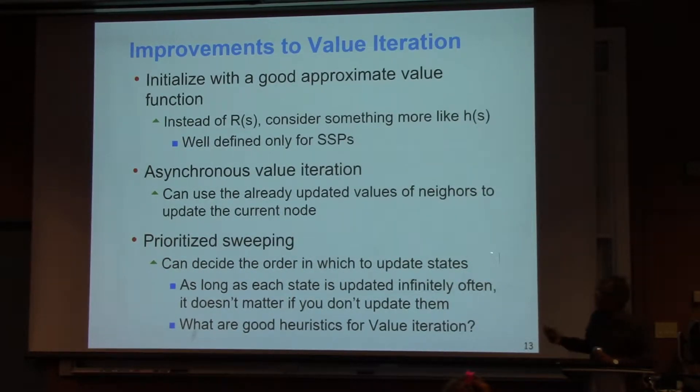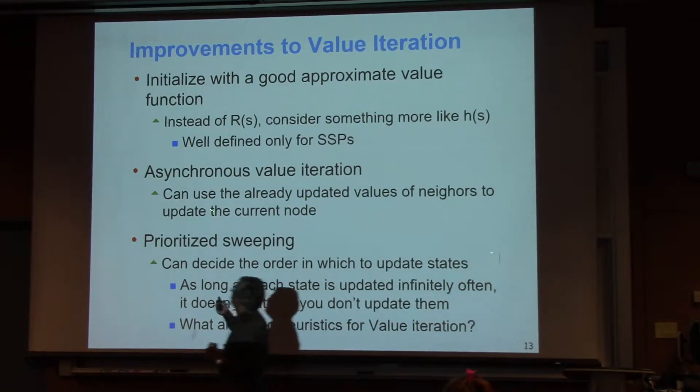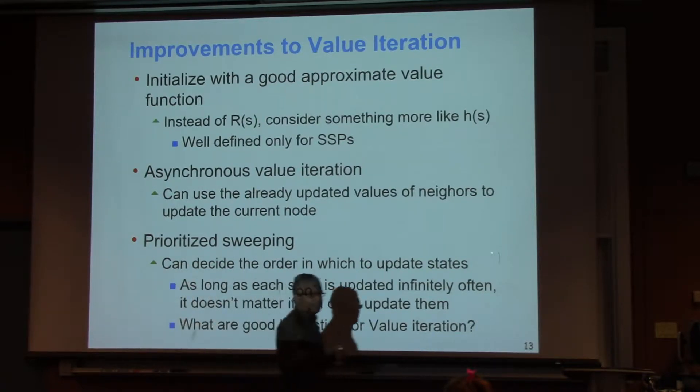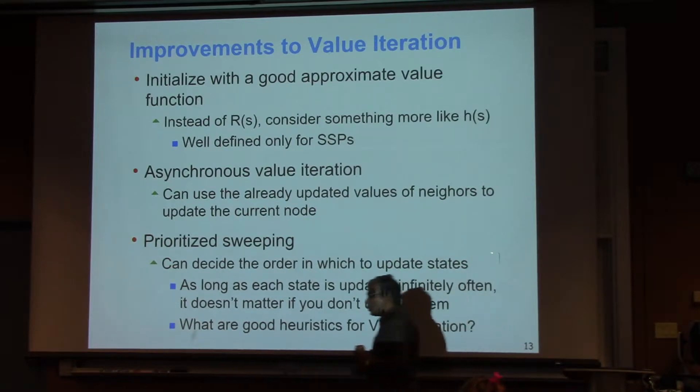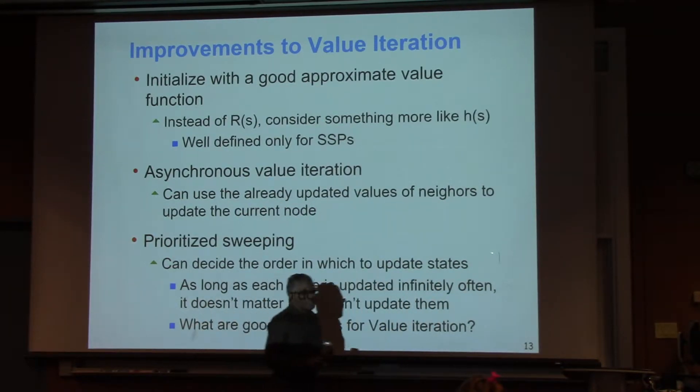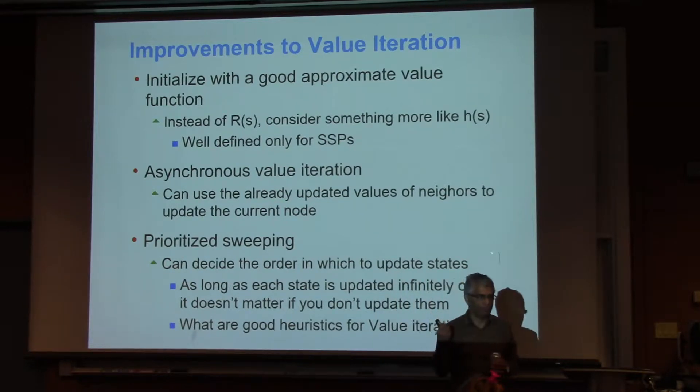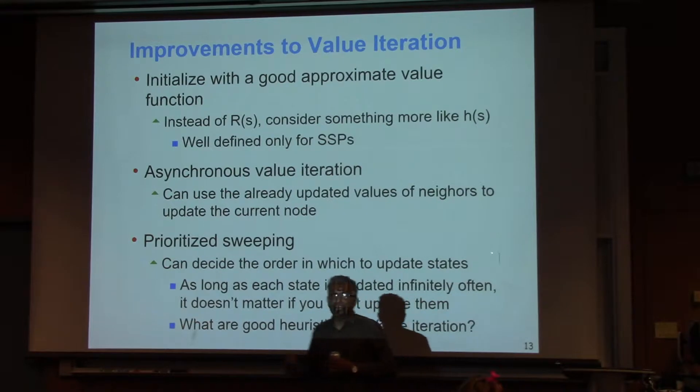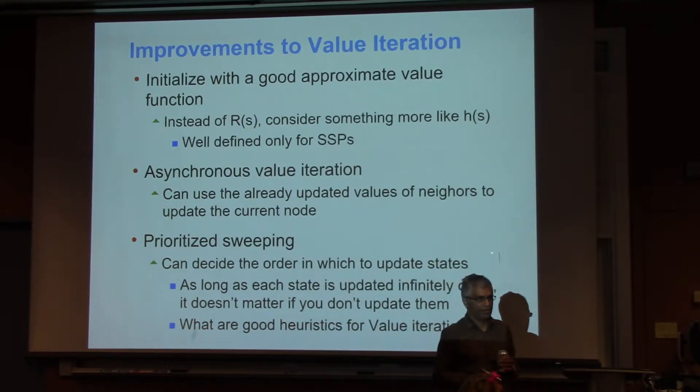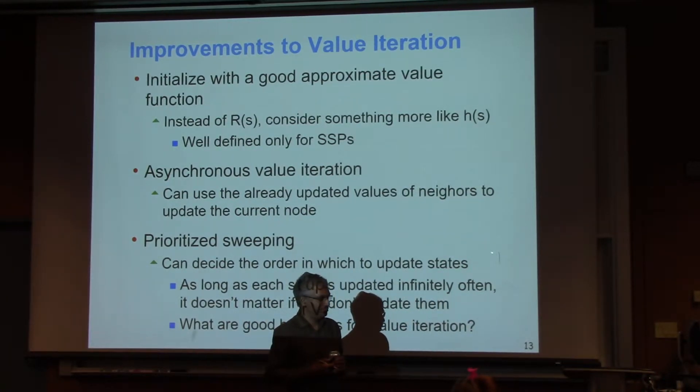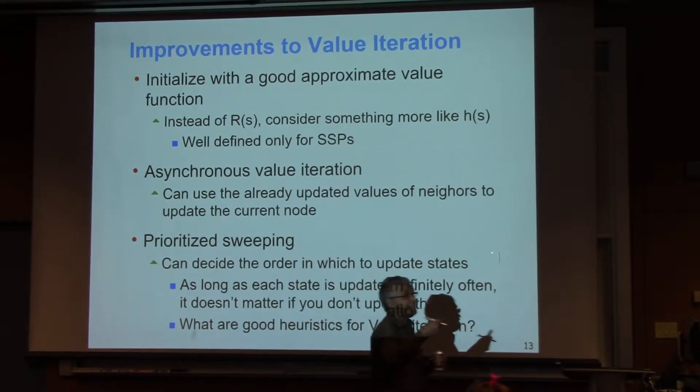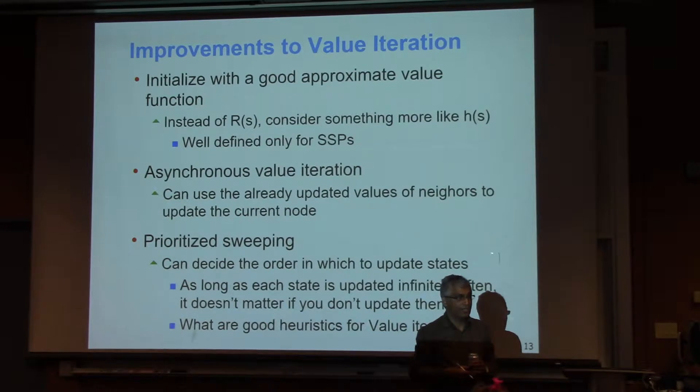Actually, there are a bunch of improvements to value functions. I'll just quickly mention that. One important thing is you don't have to actually do the synchronous updates. The way we did the value update is everybody changes their value, then everybody changes their value again. It turns out that you can actually prioritize who updates their value. You can, for example, look at how much the value of a state has changed in the previous iteration, and the ones whose value has changed a lot, you update them first.